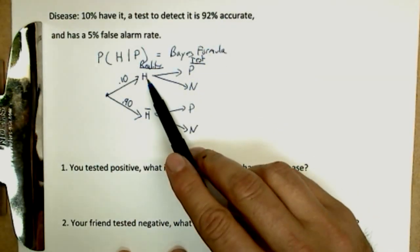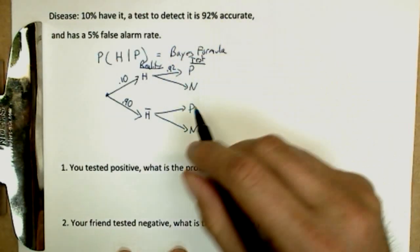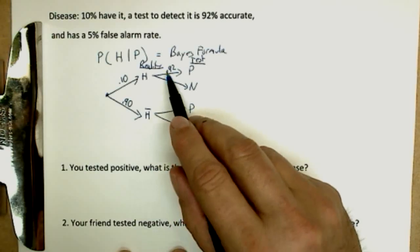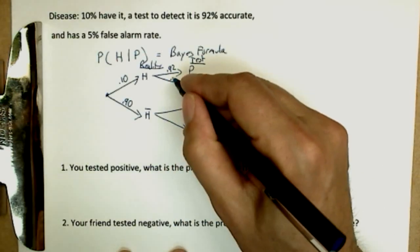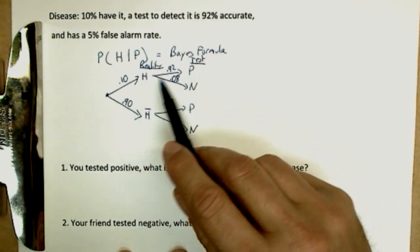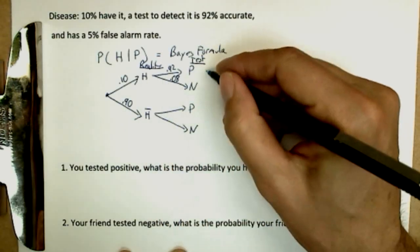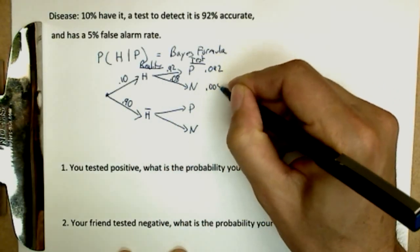Now if you have the disease, you will test positive 92% of the time, 0.92. Now that gives us an obvious number here. If you test positive 92% of the time, you will test negative 8% of the time or 0.08. And we can get these final probabilities by multiplying 0.10 times 0.92 is 0.092, 0.008.